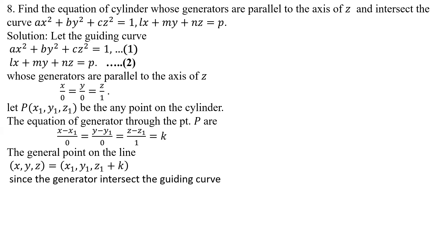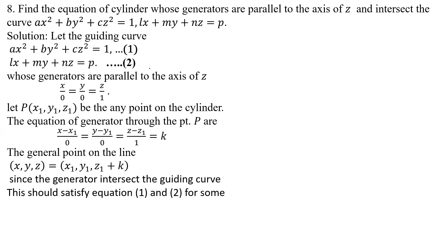Since the generator intersects the guiding curve, the general point should satisfy equation 1 and equation 2 for some value of k. Now put these points into equations 1 and 2.